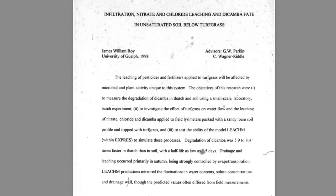Drainage and leaching occurred primarily in autumn, being strongly controlled by evapotranspiration. Leachem predictions mirrored the fluctuation in water contents, solute concentrations, and drainage well, though the predicted values often differed from field measurements.